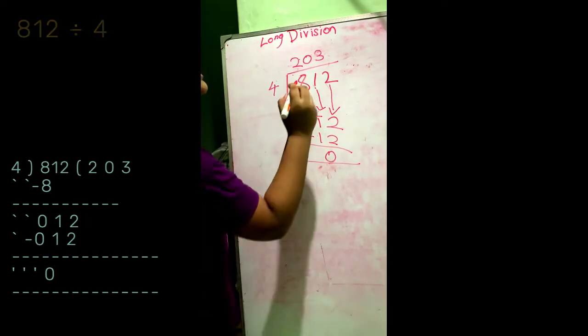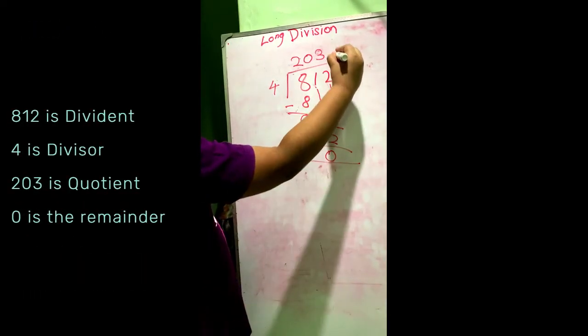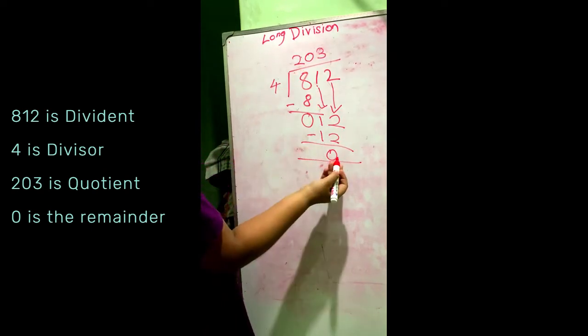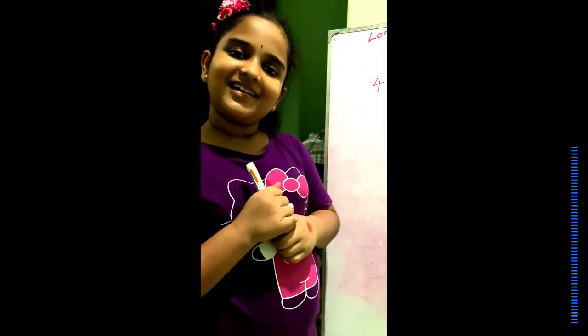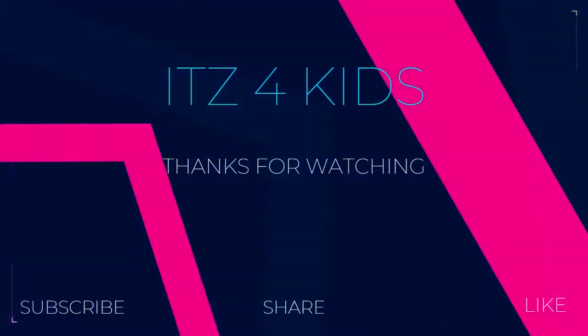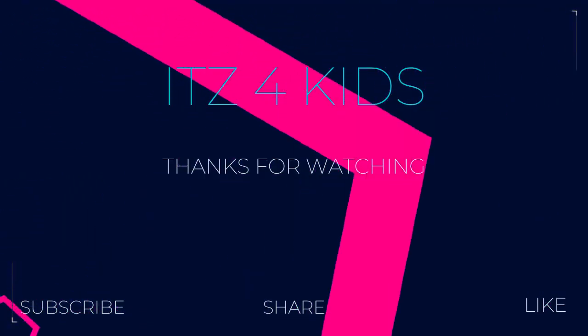So this is the dividend, this is the divisor, this is the quotient place, and this is the remainder.